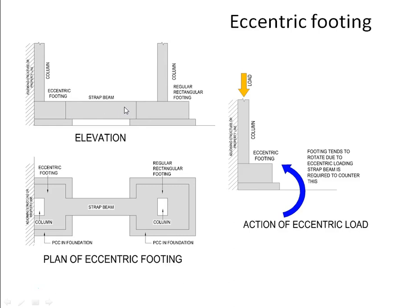This connecting beam is called a strap beam. The strap beam does two things: first, it distributes the load from the eccentric footing over to the adjoining regular footing so that we have uniform loading; second, it counters the tendency of the eccentric footing to rotate or tilt. This can be seen in plan, where the column with the eccentric footing and the column with the regular footing are joined together by means of a strap beam.